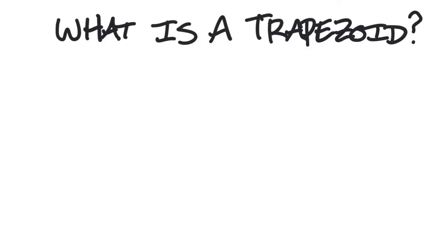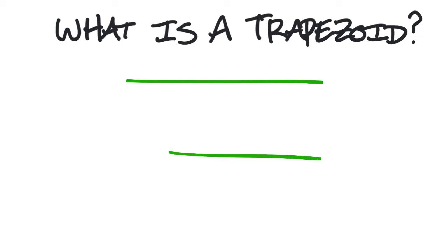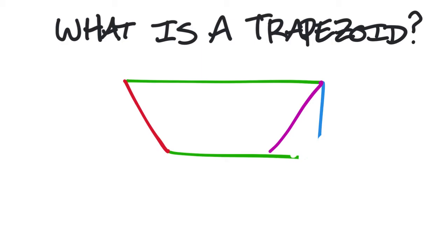What is a trapezoid? Well, the only unique thing about a trapezoid — and it is a quadrilateral because it has four sides and it closes — is that it only has one set of parallel lines. So these two green lines are parallel, and the other sides don't really matter how they work as long as they close the shape. As long as you have one set of parallel lines, it's considered a trapezoid.